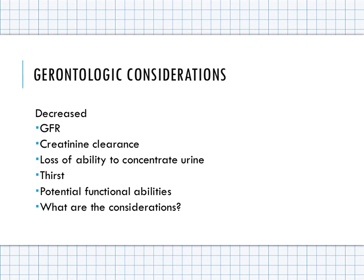This is coupled with the fact that the aging population has a decrease in their thirst mechanism and possibly a decrease in functional abilities. The main concerns with the aging population and the GU system are drug clearance — we want to watch drugs cleared by the kidneys and any nephrotoxic drugs — and we need to realize they are at increased risk for dehydration.